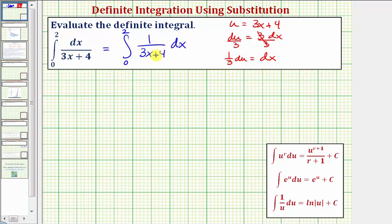We have one third du equals dx. Now we're going to rewrite this in terms of u. But because the limits of integration are for x, not u, for the next step we'll leave the limits of integration off. So we'd have the integral of, again, three x plus four is equal to u, so we have one over u. Dx is equal to one third du. So let's factor out the one third and then we have du.